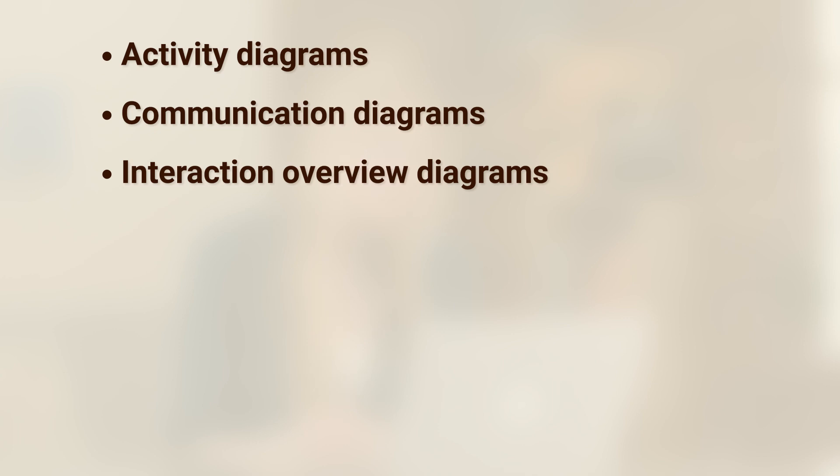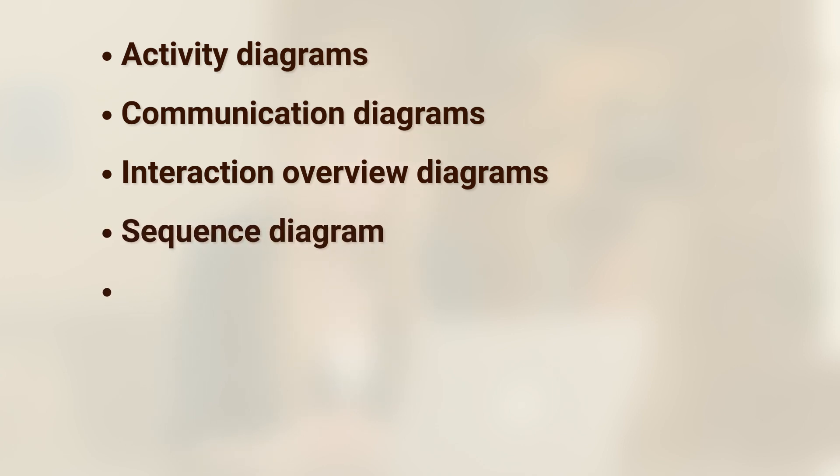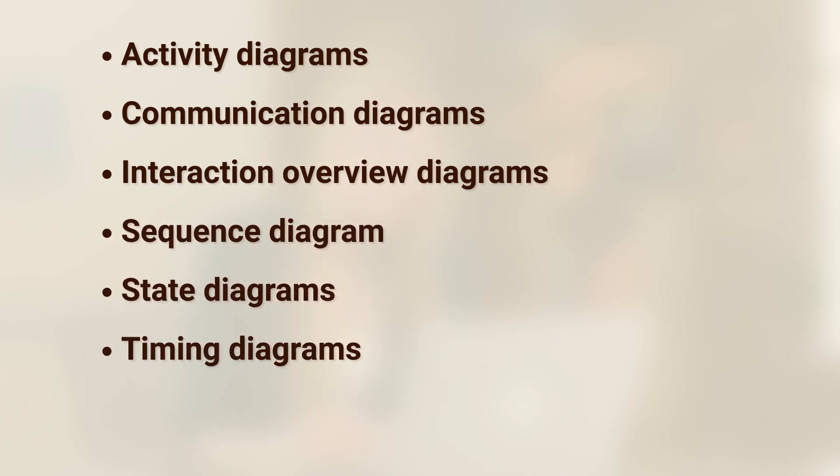The first category involves system behaviors. Here are the seven that fall into that category: activity diagrams, communication diagrams, interaction overview diagrams, sequence diagrams, state diagrams, timing diagrams, and use case diagrams. In this course, we'll take a look at the last item in that list — the use case diagram. All of the diagrams in this category revolve around behaviors, so we can actually make these sorts of diagrams with no programming involved.